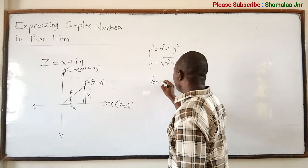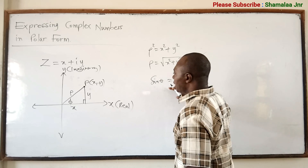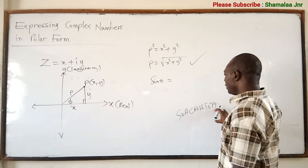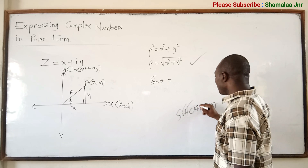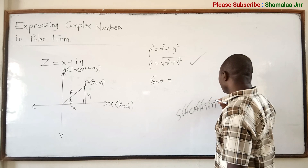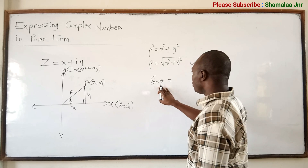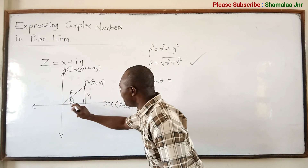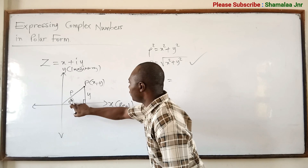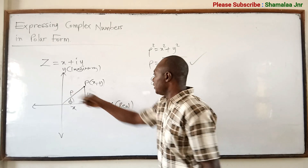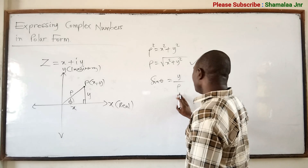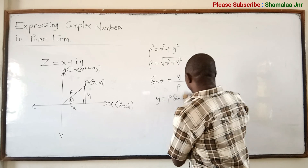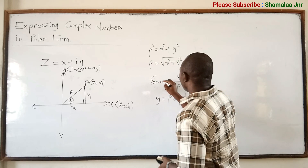From the right-angled triangle: sine is opposite over hypotenuse, cosine is adjacent over hypotenuse, and tan is opposite over adjacent. The side opposite the angle phi is y, and the hypotenuse is rho, so sine phi equals y over rho. This means y is equal to rho sine phi.